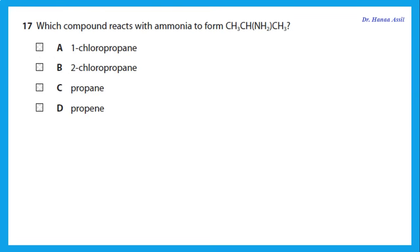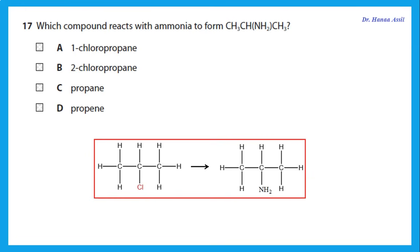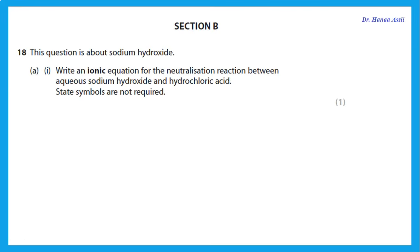Which compound reacts with ammonia to form this compound — a three-carbon compound with NH2 in the middle? We can react a halogenoalkane with ammonia; the NH2 replaces the Cl. The required product needs the chloro group in the middle, so the starting material is 2-chloropropane.